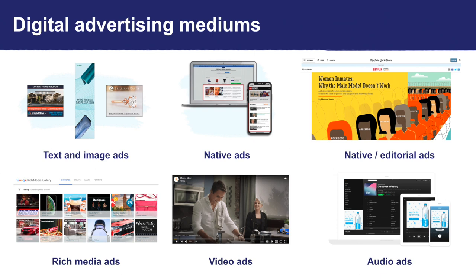Rich media is an interactive form of advertising and can include animated images, audio files, and videos. Unlike traditional text and image ads, rich media ads often include elements that allow users to interact with them. Video advertising refers to ads displayed in the form of a video instead of the traditional static form such as banner ads, and can be found on many different channels such as websites and mobile apps. Lastly, we have audio ads, which are often found in podcasts, music streaming services, and digital radio.